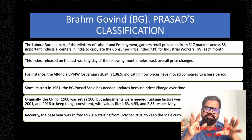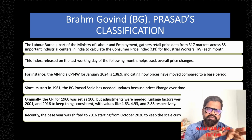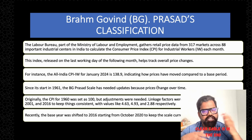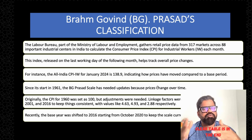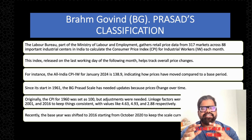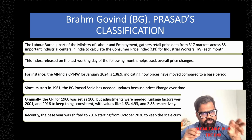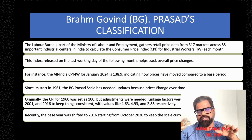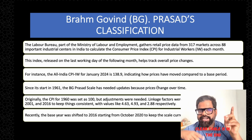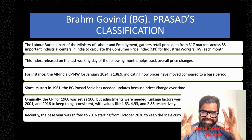You will get the CPI for Industrial Worker from the Labour Bureau. For example, since we are in the month of April, if you go to the Ministry of Labour Bureau website you will see that the Consumer Price Index for Industrial Worker for January 2024 is 138.9. This is already given, and you will be getting updated values on a regular basis — for February 2024, March, and so on.